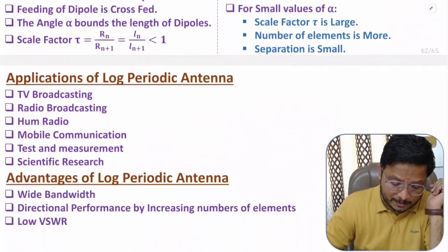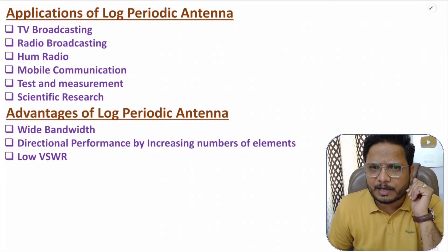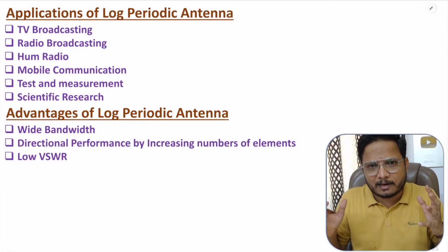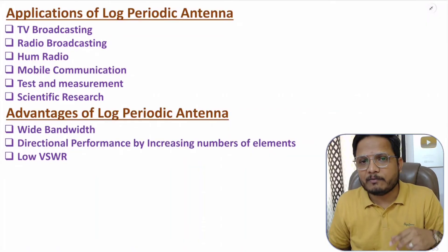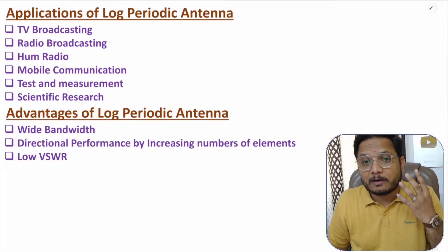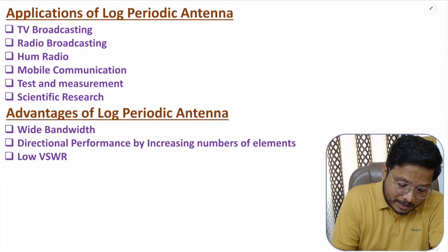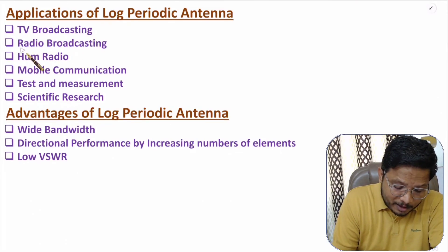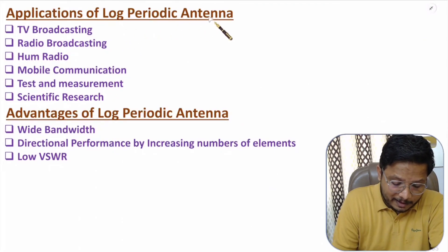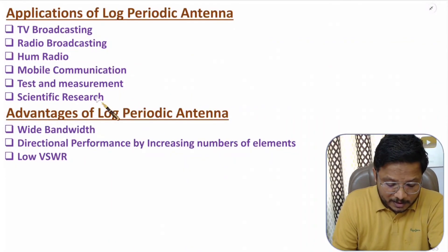Log periodic antennas are used for broad frequency ranges. We need wide frequency ranges for broadcasting of TV signals, FM signals, in TV broadcasting, radio broadcasting, ham radio, and mobile communication. Log periodic antennas are also useful in test and measurement as well as in scientific research.